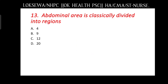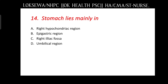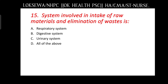Next: the abdominal area is classically divided into how many regions — 4, 9, 12, or 20? The answer is 9, option B. Next: the stomach lies mainly in — the right hypochondriac region, epigastric region, right iliac region, or umbilical region? The answer is the epigastric region.